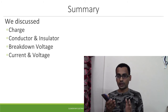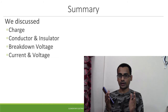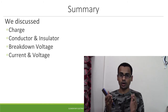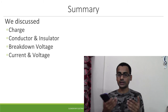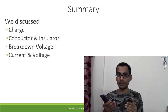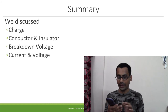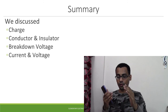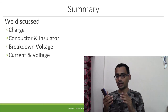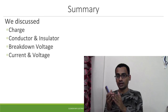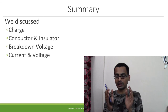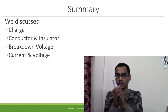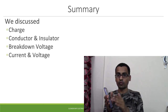We also understood breakdown voltage: the voltage at which an insulator starts conducting electricity, or current passes through the insulator. Whenever this happens, enormous heat is generated inside the insulator and it breaks down the material. Finally, current is the flow of charges, and voltage or potential difference is the force with which the electrons are being pushed — the amount of energy electrons need to move from one point to another. One volt of potential difference means you require one joule of energy to move one coulomb of charge from one point to a reference point.